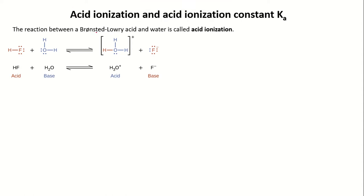A Bronsted-Lowry acid is a species that can donate protons. When an acid donates a proton, it results in the conjugate base. The species that accepts the proton is the base, and once it accepts the proton it becomes the conjugate acid. In this acid ionization process, water is actually a solvent — we consider it as a solvent rather than a reactant. However, the solvent can act as a base in this ionization process.